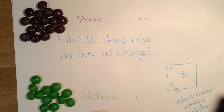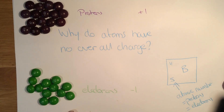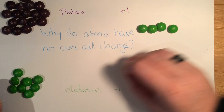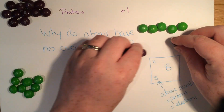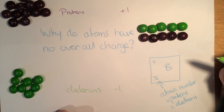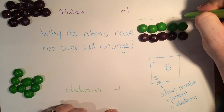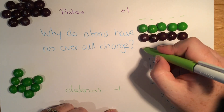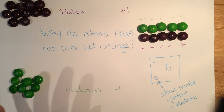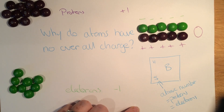So an atom has the same number of protons and the same number of electrons. If we look at boron as our example, it has five protons and five electrons — five positive charges and five negative charges. We know that positives and negatives can cancel each other out, so the overall charge on this is zero.